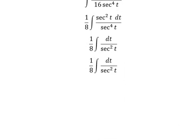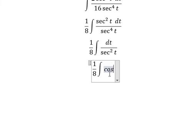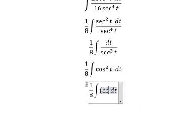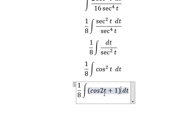This gives us the integral of cos² t dt. We can change cos² t into (cos 2t + 1)/2 using the double angle formula.